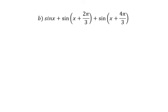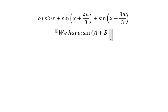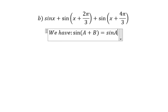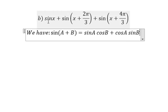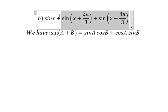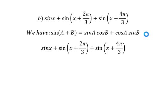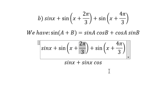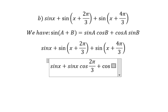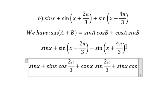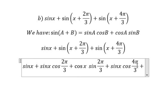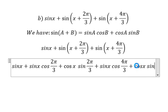Question number two. We have the formula here: cosine A cosine B plus cosine A cosine B. So we apply this formula. We get cosine s cosine(2b/3), plus cosine s cosine b, plus cosine s cosine(4b/3).